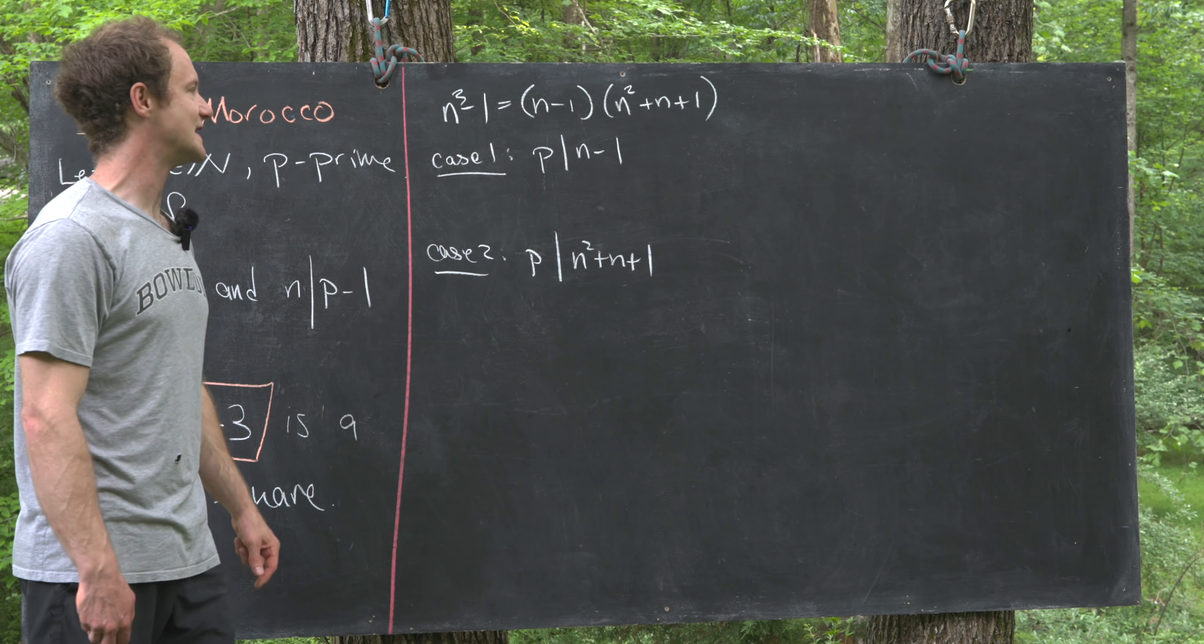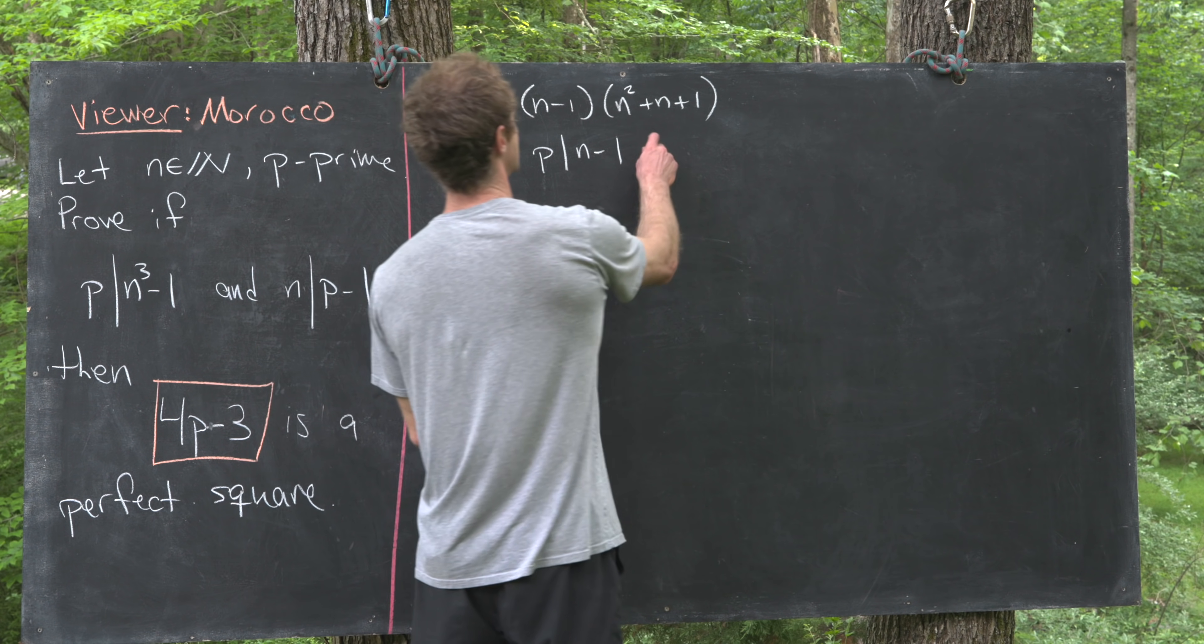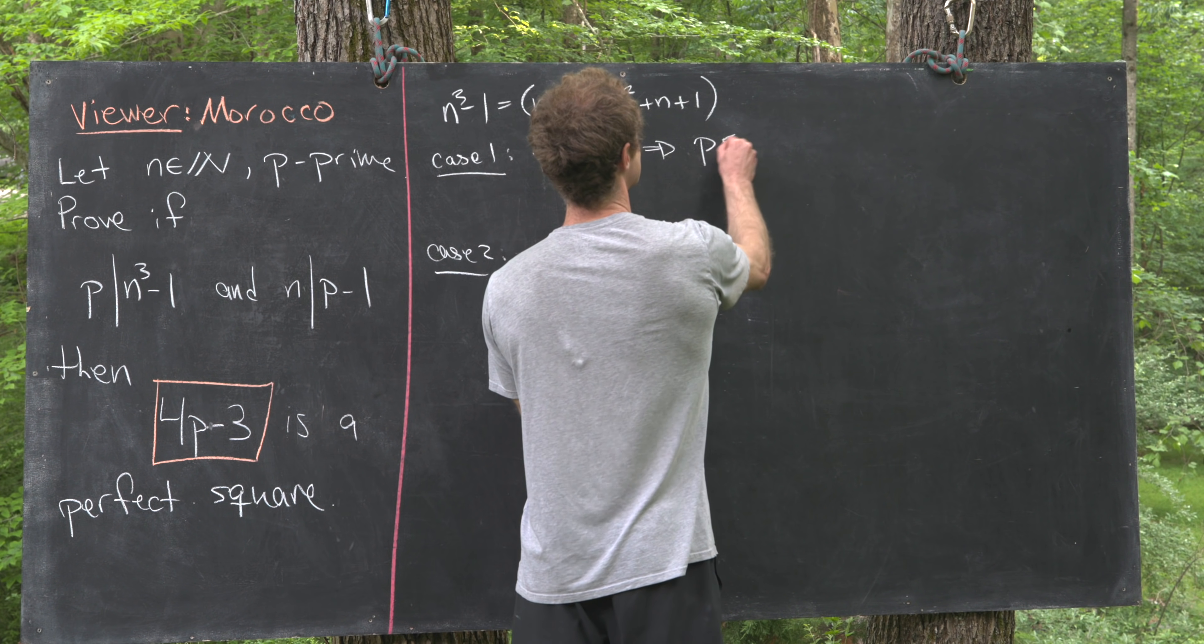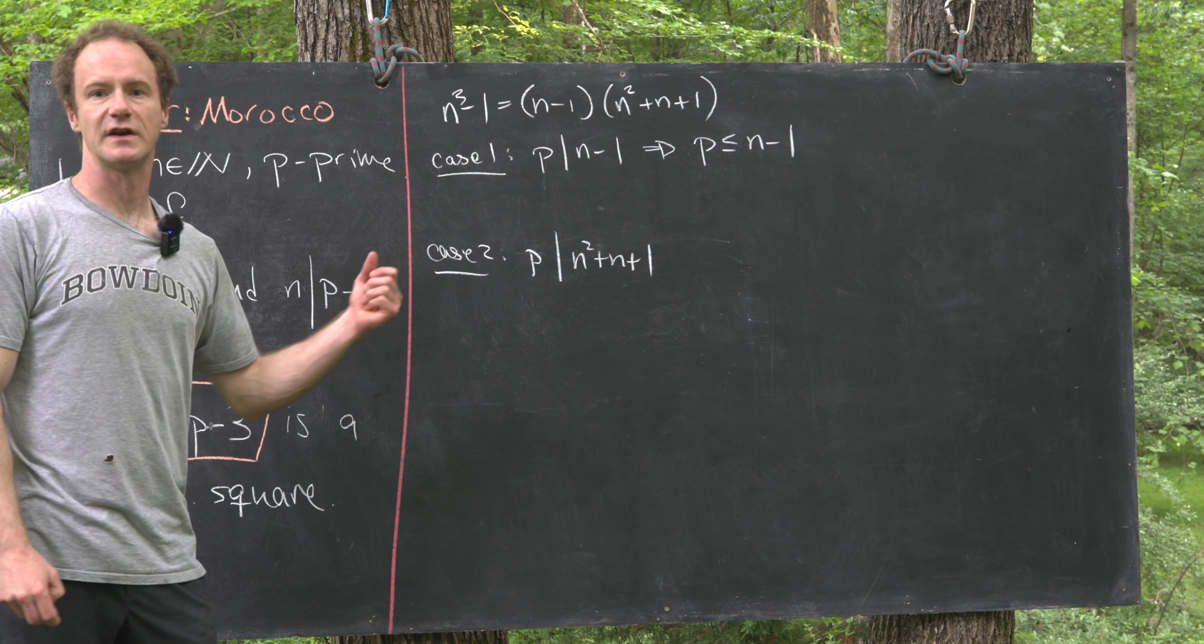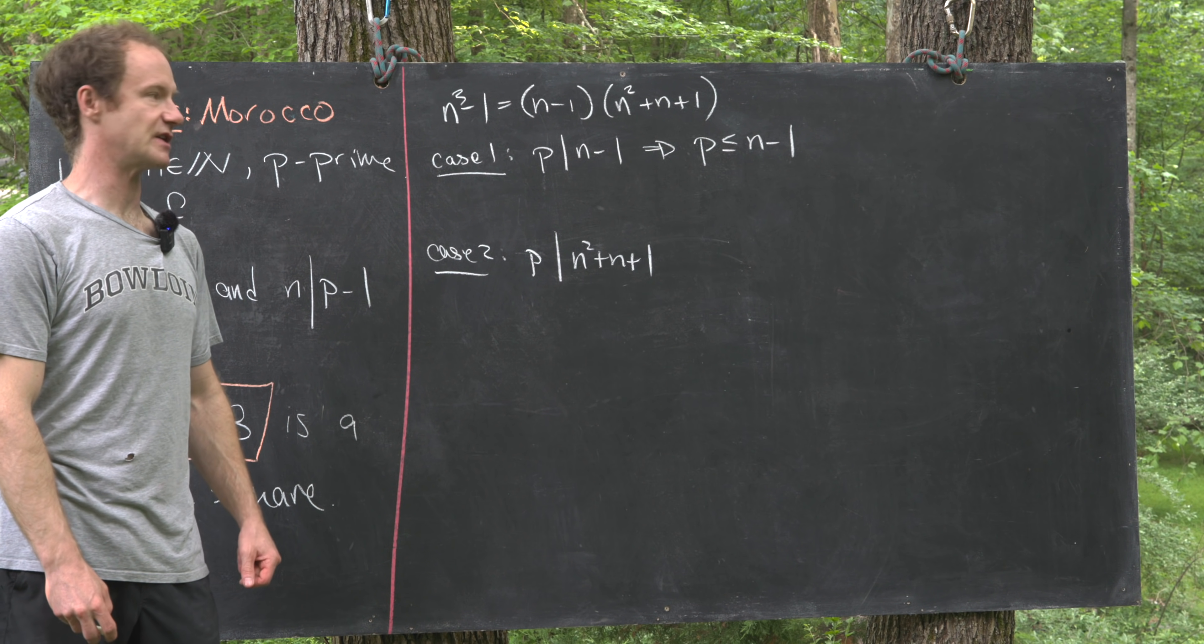So let's look at case 1 first. Notice that this tells us that p is less than or equal to n-1, so in order to divide a number, you must be less than or equal to that number.